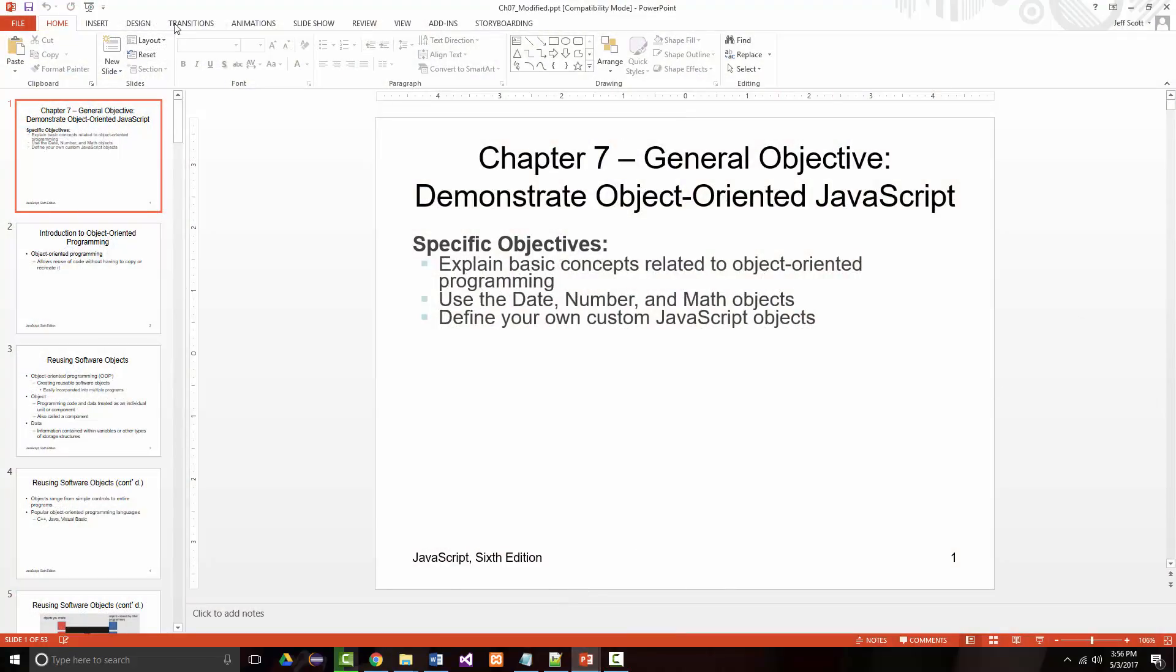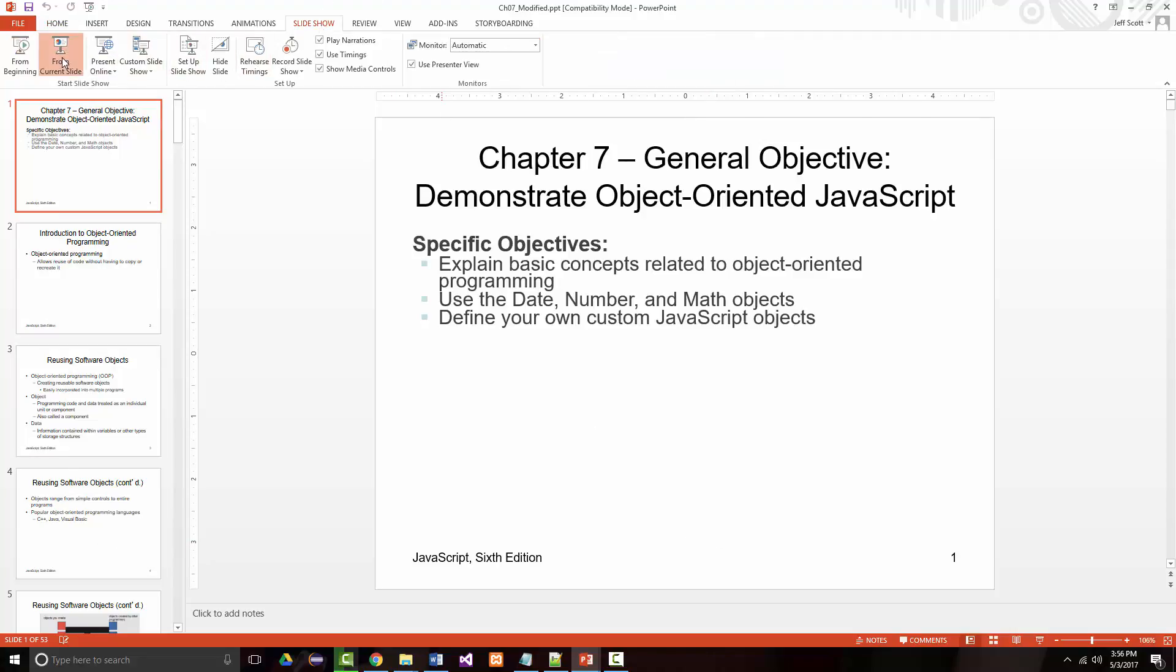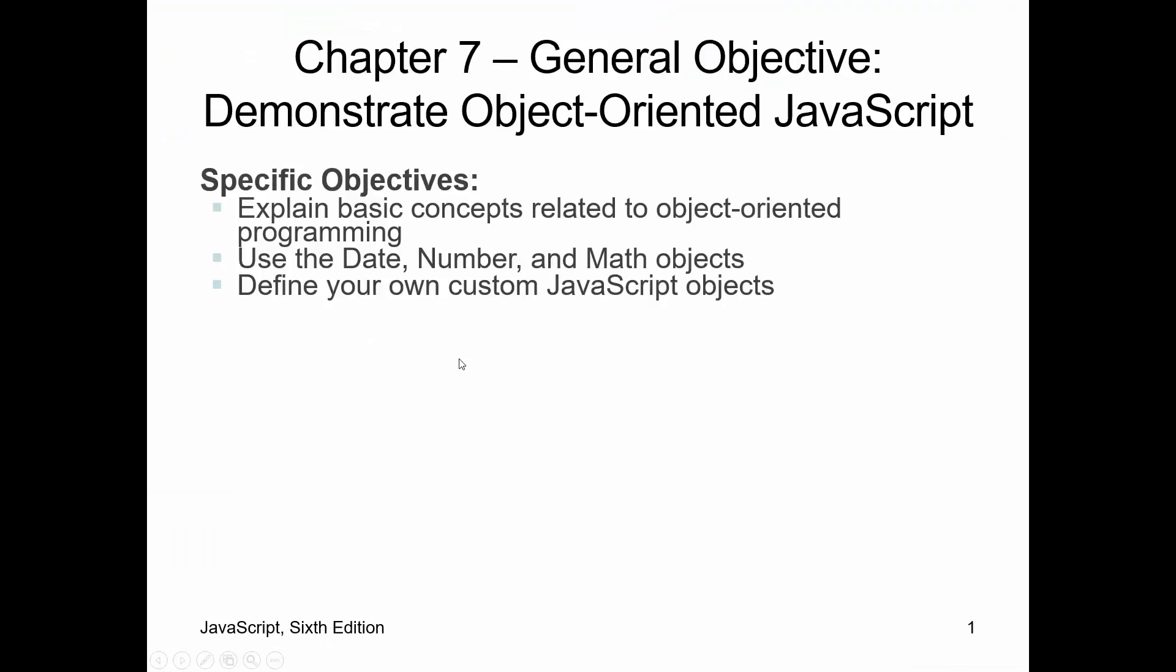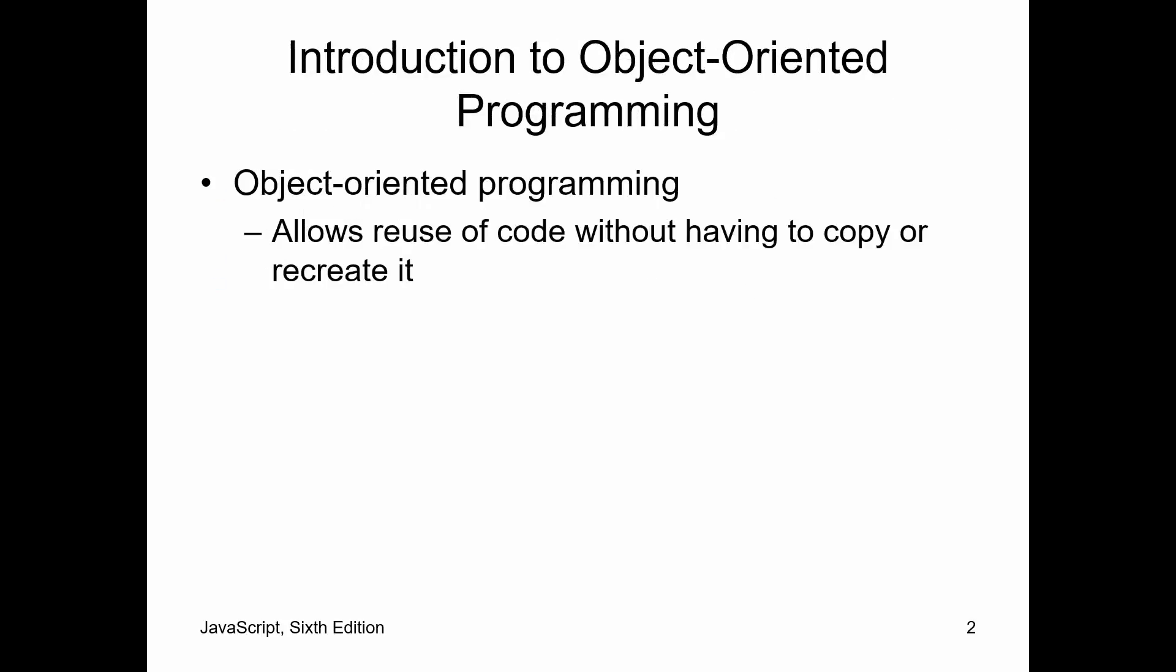Chapter 7 is on object-oriented JavaScript. Notice we only have three objectives: explain the basic concepts related to object-oriented programming, use the date class, the number class, and the math class, and finally define our own JavaScript objects.